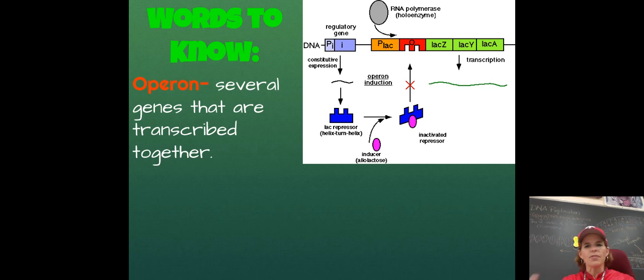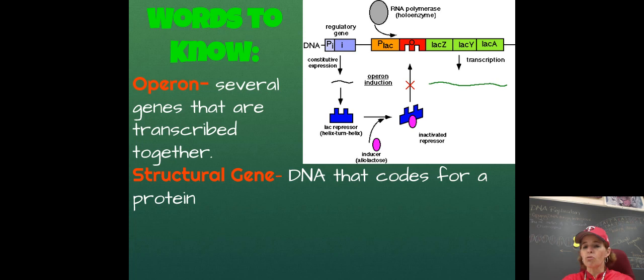A structural gene, and those are the ones that are bright green that say LAC-Z, LAC-Y, and LAC-A. A structural gene is any gene that codes for a protein specifically. Not all genes code for proteins. For example, the O, if you see the red section that has the letter O on that, that's the operator. And that's just a place where the repressor can sit. But it doesn't actually code for DNA. I'm sorry. It doesn't code for a protein.